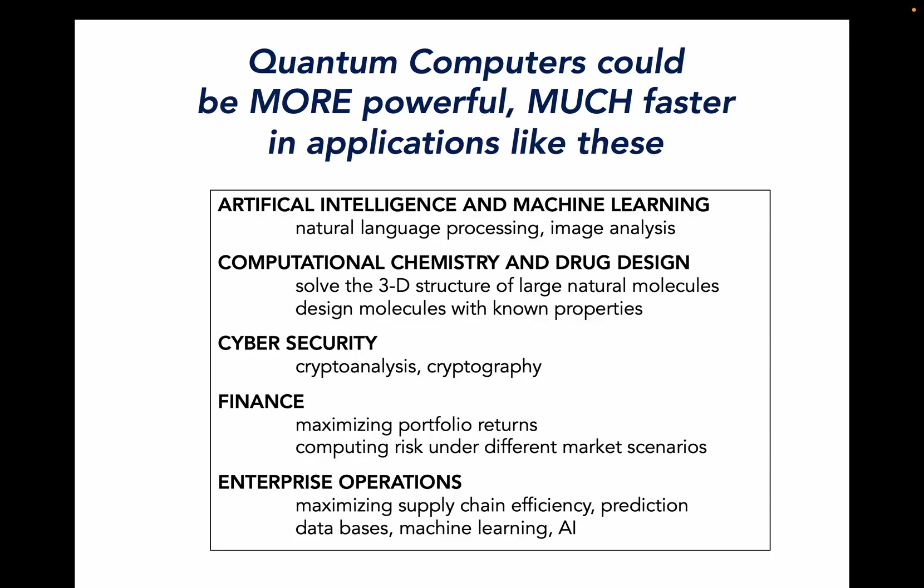Quantum computers could be much more powerful and faster in applications like natural language processing. We've been following an edict from a British linguist who said you shall know the meanings of words by the company they keep. All of NLP is based on the association of words, but not their meanings or deeper things like irony and context. Having much more powerful quantum computers might allow us to do that.